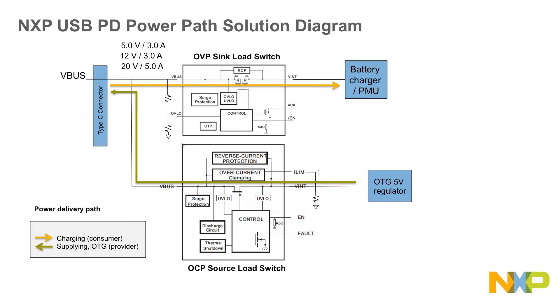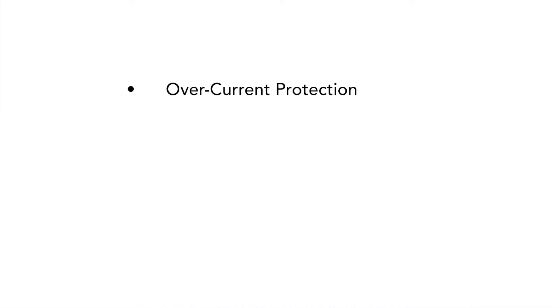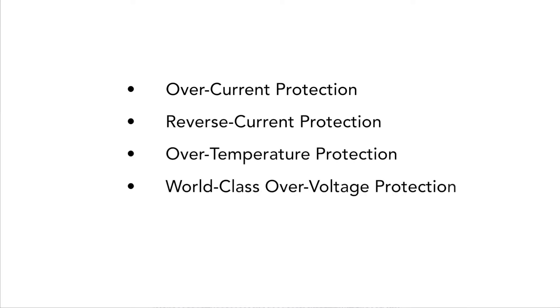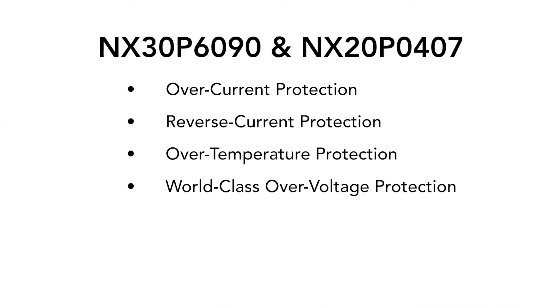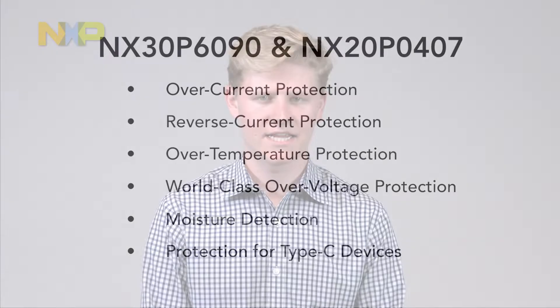NXP ensures the system is safe in every application scenario, even in unexpected application conditions. Our load switches come with complete system protections including overcurrent protection, reverse current protection, and over-temperature protection, and world-class overvoltage protection for NX30P6090 and NX20P0407, with some even equipped with moisture detection and protection for our Type-C devices. In addition, NXP load switches integrate surge protection circuit, which complies to IEC 61000-4-5 and IEC 61000-4-2 system-level ESD protection for the pins at the connector side.